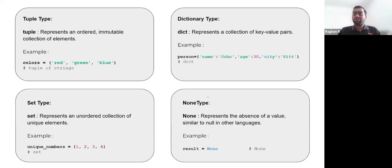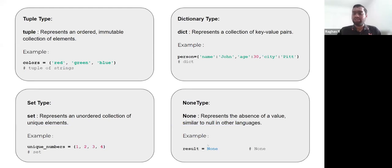We also have something called NoneType, which basically represents the absence of a value, similar to null in other languages. You can initialize a variable with None, which has no value, and maybe later the variable can be modified with a new value however you want.